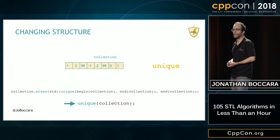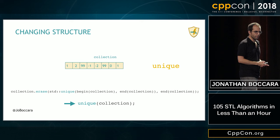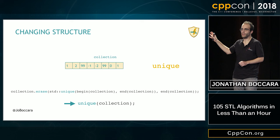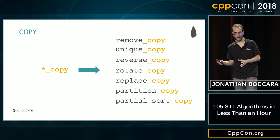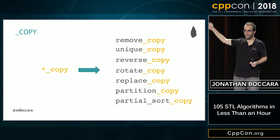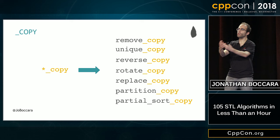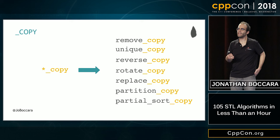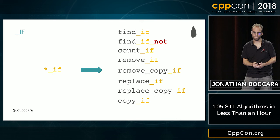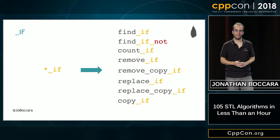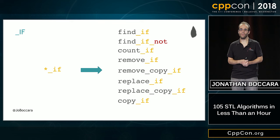There's a question from the audience: one was not removed — that's a good observation. It's not removed because there are no adjacent duplicate ones in the collection. We've also unlocked a new rune: copy. Combined with algorithms like remove, unique, or replace, the copy_ variants leave the input collection untouched and produce output to an output iterator. And the _if rune adds a predicate: where find takes a value, find_if takes a predicate but does essentially the same thing.